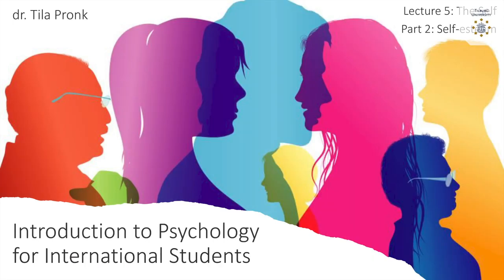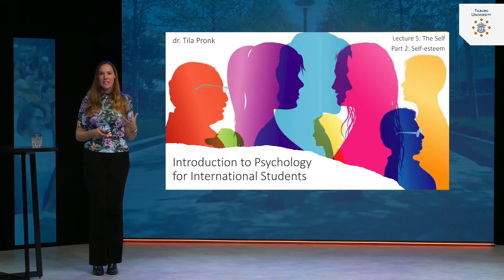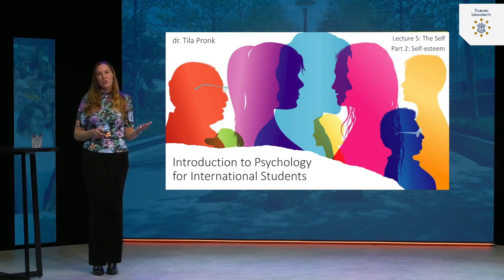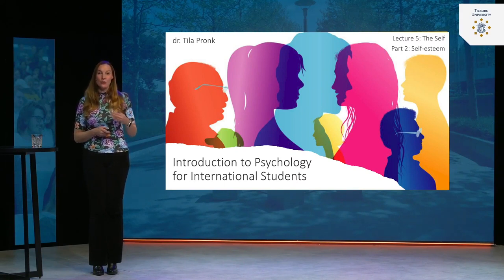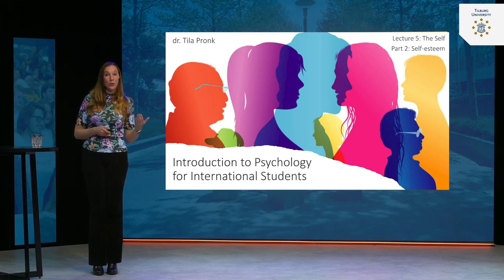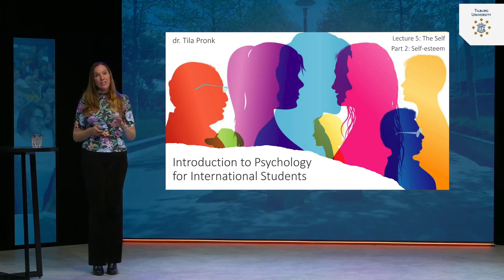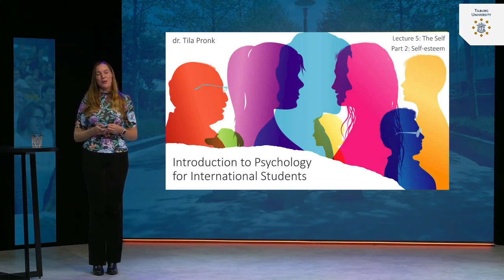This is part two of lecture five. In the first part we saw where our self-concept comes from — the idea of who we are, our self-knowledge. We don't only have an idea of who we are, we also feel a certain way about this. We can have a good or bad feeling about who we are, and this is captured in our self-esteem. That is what this part of the lecture is about.